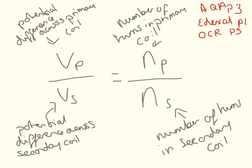There are two equations that you need to know. This first equation covers all examples: the potential difference in the primary coil divided by the potential difference in the secondary coil is equal to the number of turns in the primary coil divided by the number of turns in the secondary coil. The units we're using today: potential difference is in volts, and number of turns is just the number of turns.